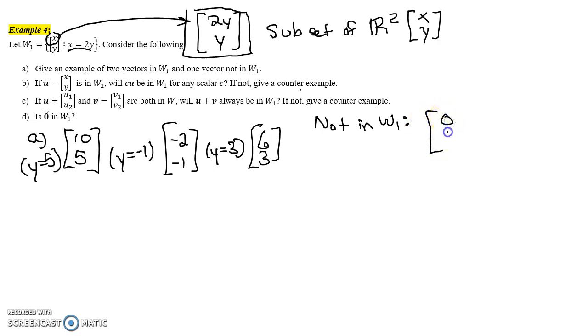So [0, 1] would work, because the x component here does not equal 2 times the y component. Another example might be [5, -3], because again, this x component does not equal 2 times the y component.